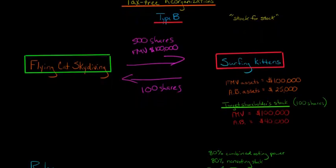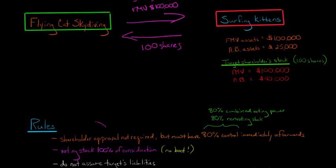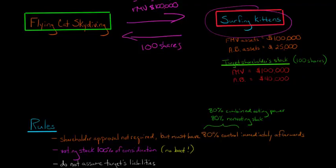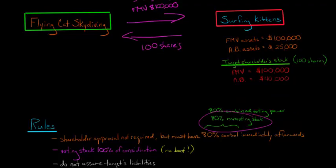Type B is a transaction that allows you to simply swap stock for stock and get a tax-free acquisition, but there are some important rules. Shareholder approval is generally not required for the type B. However, you have to have at least 80% control of the target — in this case, Surfing Kittens — immediately after the transaction. That means 80% of the combined voting power of all classes of voting stock and 80% of any non-voting stock.